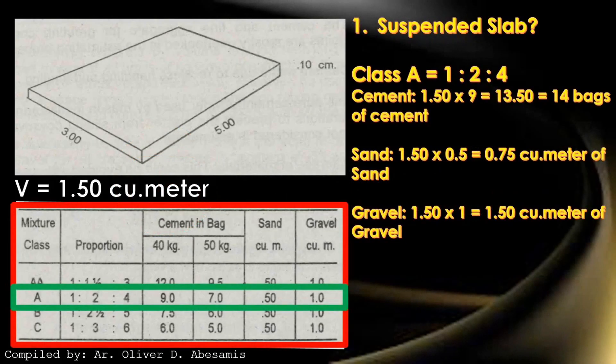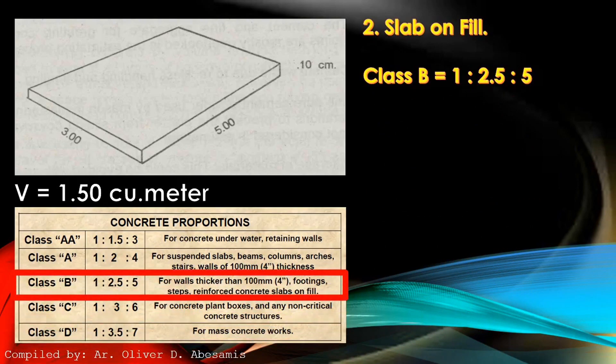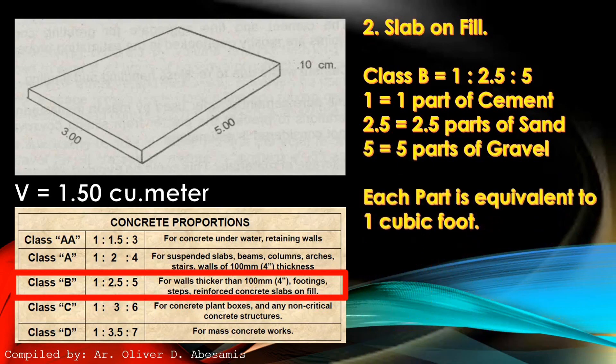Let's do now the calculation for slab on fill. Slab on fill, class B. The concrete proportion is 1:2.5:5. The first number is 1 part of cement. The second number is 2.5 parts of sand. The third number is 5 parts of gravel. Each part is equivalent to 1 cubic foot.